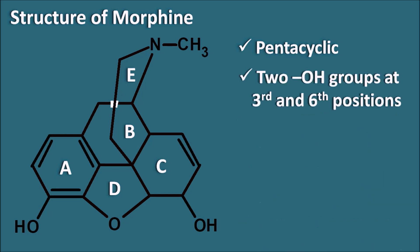The second feature is that morphine has OH groups at the third and sixth positions. The third position has an OH group attached to the phenyl ring — a phenolic OH group. The sixth position has an OH group attached to the cyclohexenyl ring — an alcoholic OH group. So morphine has two OH groups: third position phenolic and sixth position alcoholic.